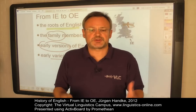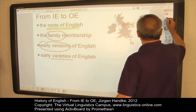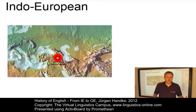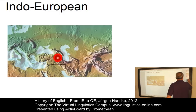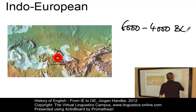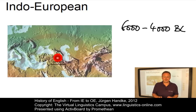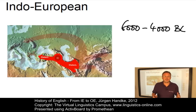English belongs to the West Germanic branch of the Indo-European language family. In order to understand the development of English, let us start looking at these language families first. Proto-Indo-European, since it is an extinct but reconstructed language, is assumed to have been spoken in Central Europe and South Asia between 6,000 and 4,000 before Christ. The Indo-Europeans probably lived in Central and Eastern Europe before they began to travel West and East between 3,500 and 2,500 before Christ. This movement led to the emergence of new dialects.